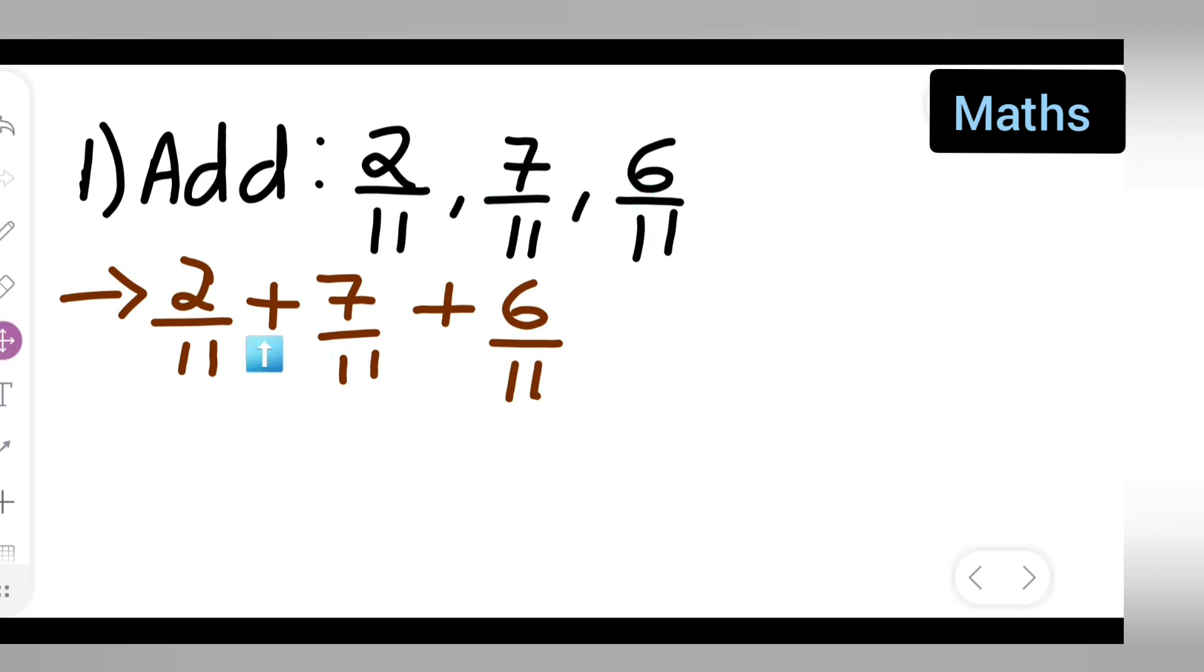It is equal to (2 plus 7 plus 6) upon 11. 11 is common, right? Now you have to add all these numbers: 2 plus 7 is 9, 9 plus 6 will be 15. So 15/11 is your